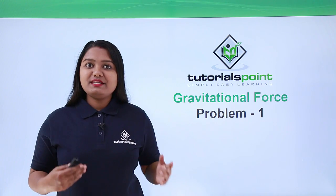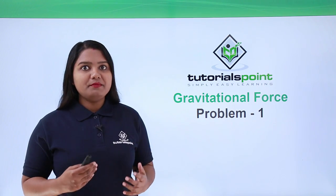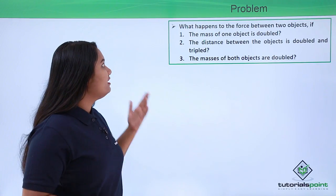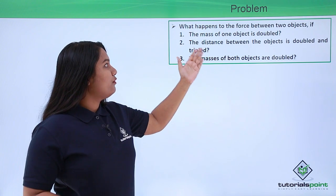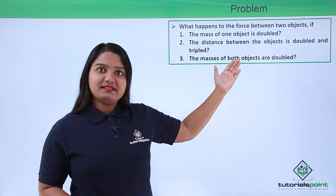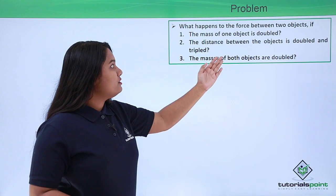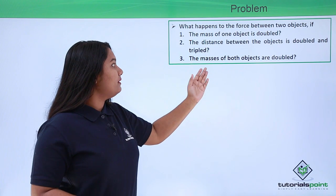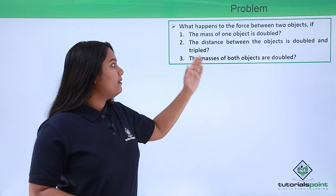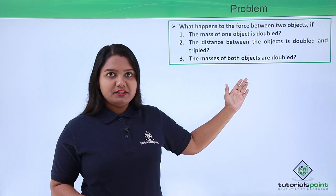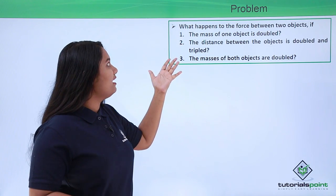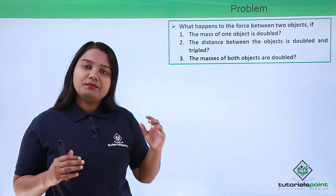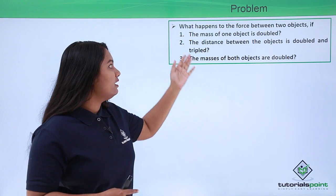Hello everyone. In this video we will be solving a problem based on the concept of gravitational force. The problem is: what happens to the force between two objects if — first, the mass of one object is doubled; second, the distance between the objects is doubled and tripled; and third, the masses of both objects are doubled. We need to find out what will happen to the attractive gravitational force between the two bodies under these three conditions.